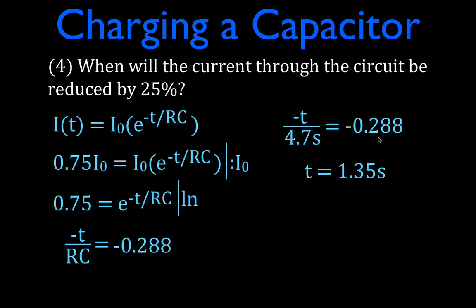That is how long it takes for the current in the circuit to be reduced by 25%, or to be 75% of the maximum. We calculated voltage across the capacitor two different ways — using time constants and using regular time — figured out when the capacitor is fully charged after five time constants, and determined when the current is reduced by 25%. Thank you for watching. Subscribe to my YouTube channel for physics, chemistry, and math videos at Step-by-Step Science.